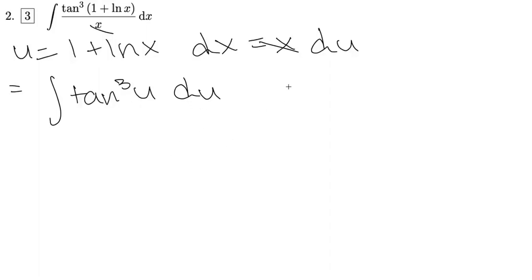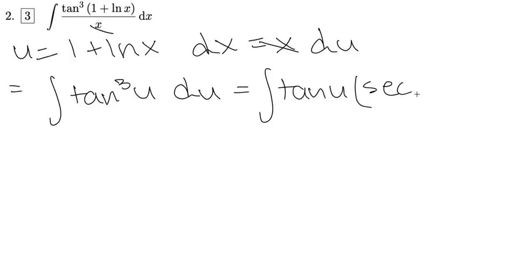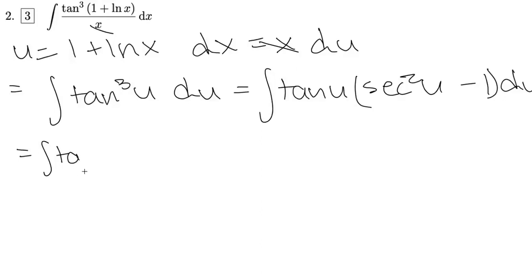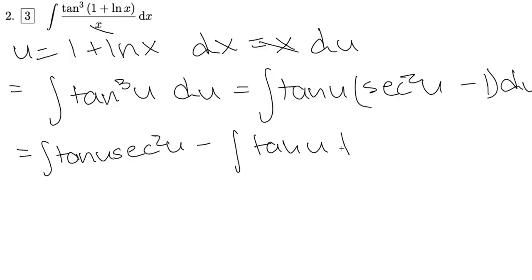Which is equal to the integral of tan u times sec squared u minus 1 du. So this is going to be equal to the integral of tan u times sec squared u minus the integral of tan u du.